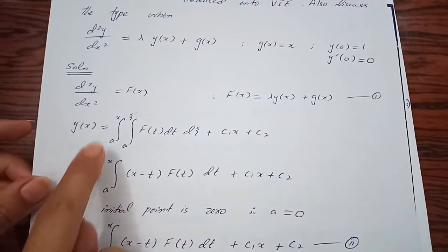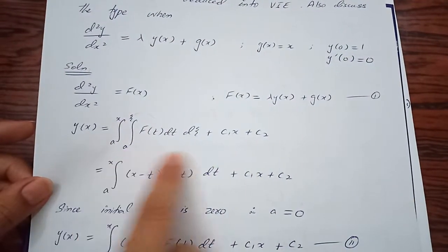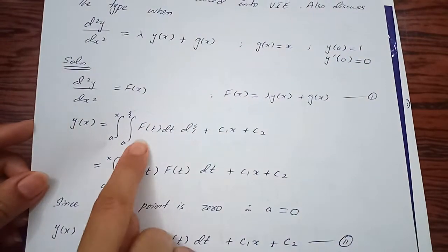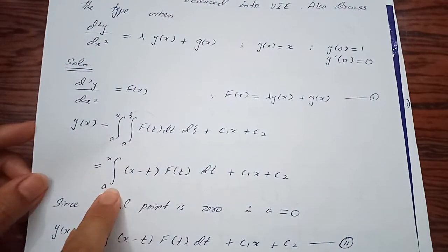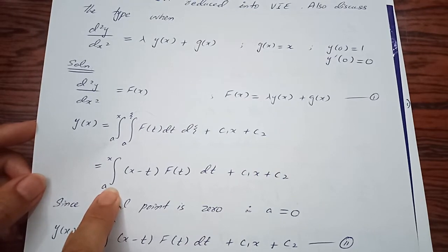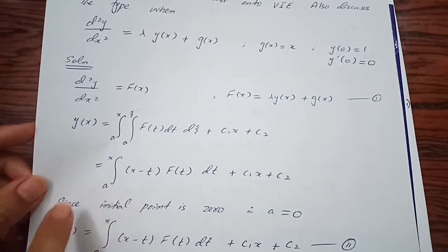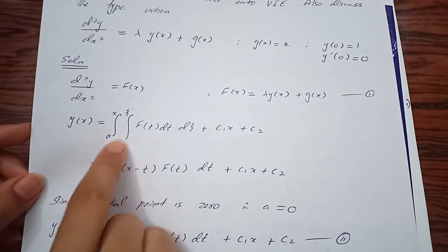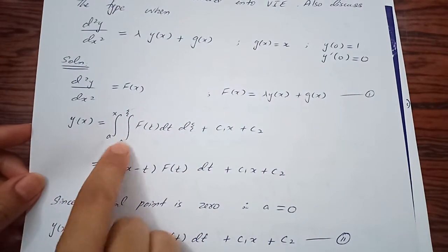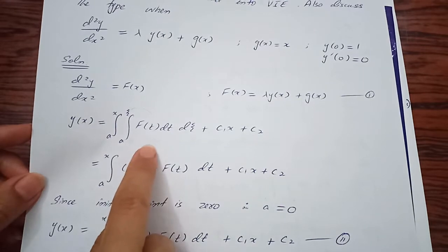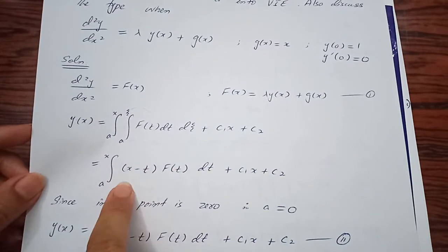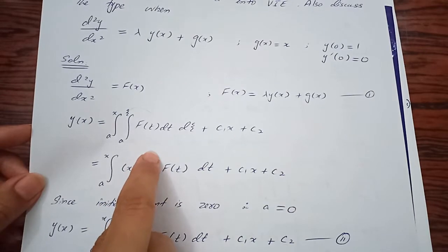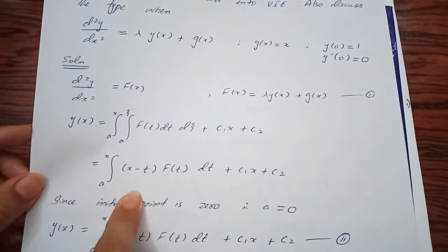We can integrate and convert multiple integrals into a single integral. The result is: integral from a to x of (x-t)^(2-1)/(2-1)! f(t)dt, which simplifies to integral of (x-t)f(t)dt + c₁x + c₂.